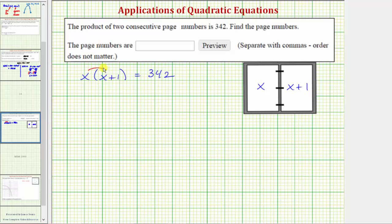So let's first clear the parentheses by distributing. x times x equals x squared. So we have x squared plus x times 1 is x equals 342. Notice how we have a quadratic equation. So let's see if we can solve the equation by factoring.